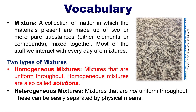Most of the stuff that we interact with are mixtures, and they fall into these two subcategories: homogeneous and heterogeneous. Anytime you see a mixture that has a completely uniform color throughout, that's probably an indicator that all the substances in there are spread out totally uniformly and it's homogeneous. In contrast, if you see the opposite — like this granite countertop — then it is heterogeneous.